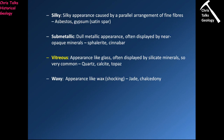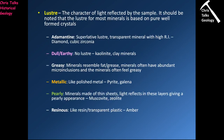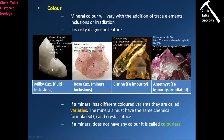A vitreous luster means the light reflects off the surface like glass — that doesn't necessarily mean the light passes straight through. Looking at the quartz varieties: citrine and amethyst look very glassy, with light passing through. Milky quartz doesn't have the same glassy appearance because it is so cloudy inside, but the light still reflects off its surface and it still has a kind of glassy look.